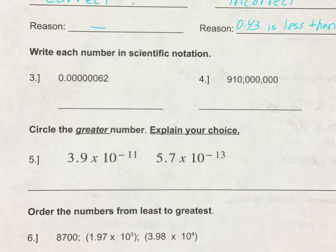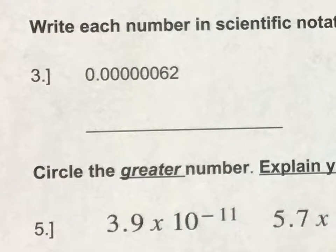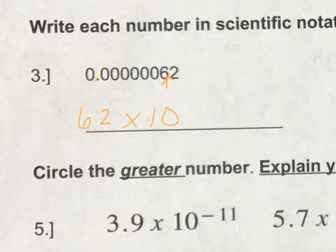The next step is to write each number into scientific notation. So for number three, we want to place the decimal between the 6 and the 2 to make a coefficient of 6.2. Then write your power of 10 times 10. The last step is to count the decimal positions — 1, 2, 3, 4, 5, 6, 7 moves to the right. Small numbers have negative exponents, so 6.2 times 10 to the negative seventh.